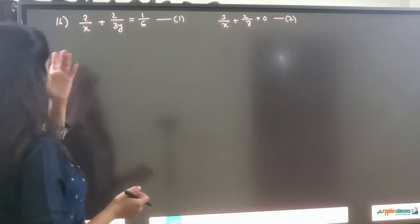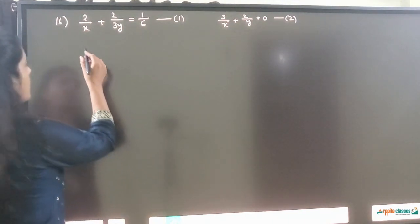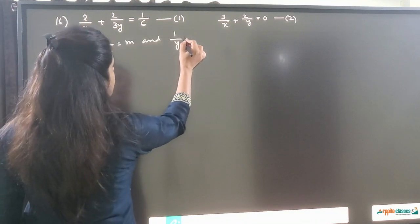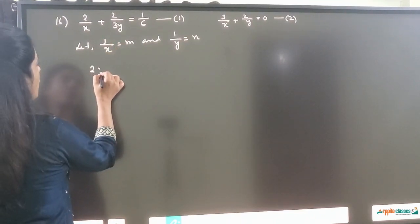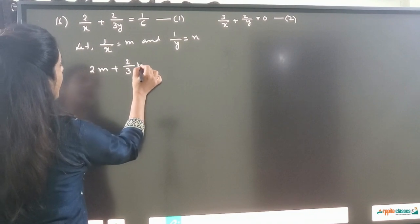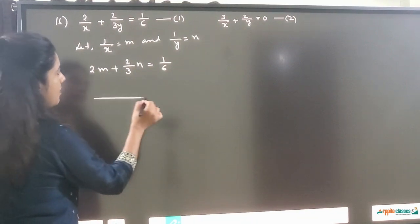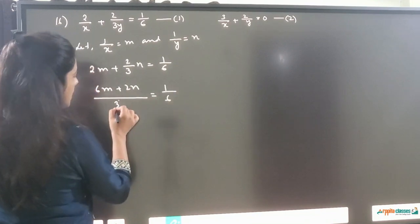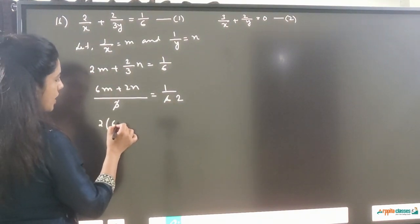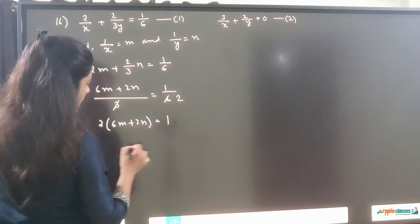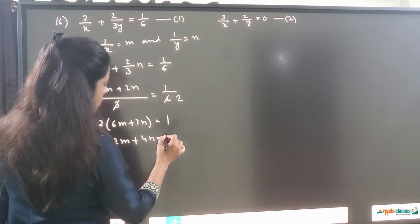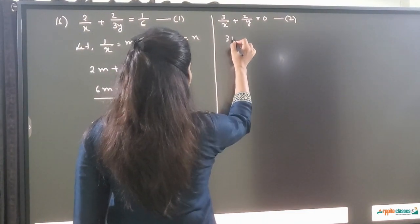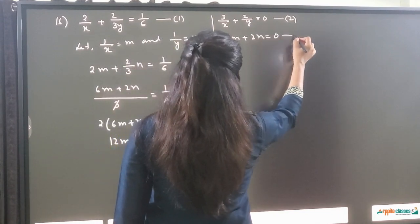In question number 16, both x and y are in the denominator. So we consider 1 upon x equal to m and 1 upon y equal to n. The first equation becomes 2m plus (2 by 3)n equals 1 upon 6. Taking LCM 3: 6m plus 2n equals 1 upon 6, then cross multiplying gives 12m plus 4n equals 1. This is equation 3. The second equation becomes 3m plus 2n equals 0. This is equation 4.